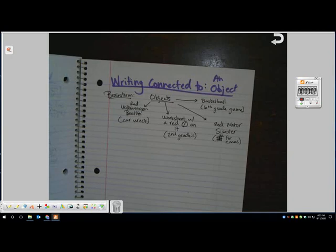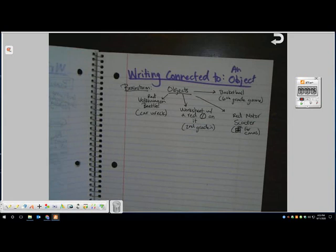All righty. So let's talk about our fourth gathering strategy. It's really similar to writing connected to a place, but this time it's writing connected to an object.